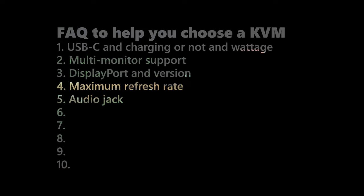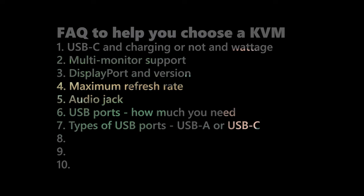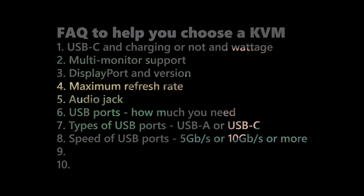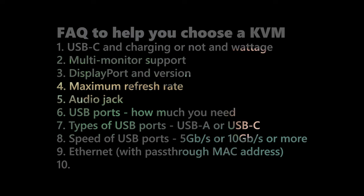Number six: USB ports — do you need them, and how many do you actually need? Number seven: the type of ports you need — USB-A or USB-C? Number eight: the speed of the USB ports — do you need USB 2 or USB 3, and also do you need 5Gbps, 10Gbps, or the newer 40Gbps or 80Gbps? You need to check that as well. Number nine: Ethernet with pass-through MAC addresses — this is for security purposes.